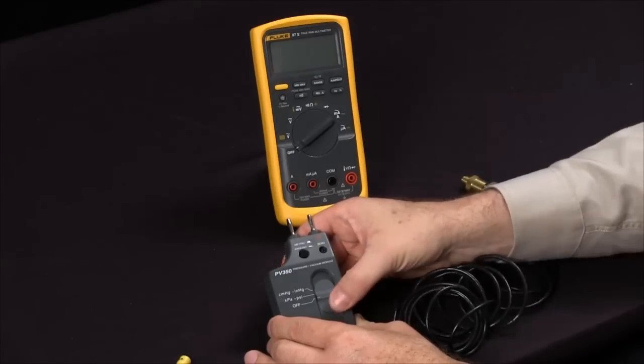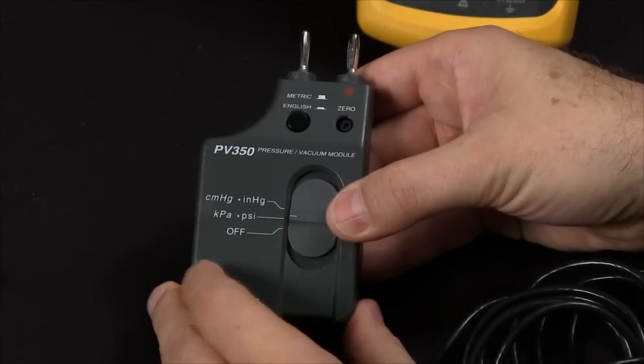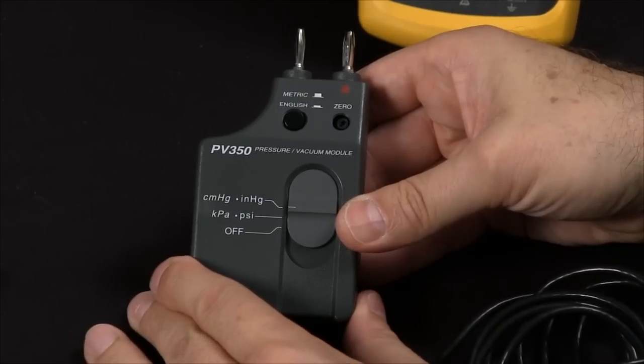The PV350 will measure pressure in either kilopascals or psi. You can also measure vacuum in either centimeters of mercury or inches of mercury.